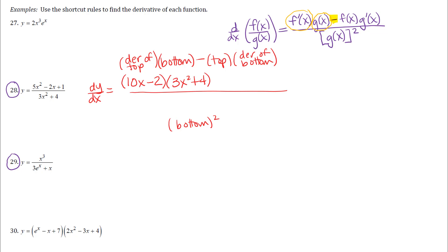So times the bottom, I'm just writing that bottom function down, minus the top function, I'm just going to write that down, then times the derivative of the bottom function. So this is just going to be the derivative of 3x squared plus 4. So I will have 6x and then the derivative of 4, that constant term is 0, so I'm not going to write that.